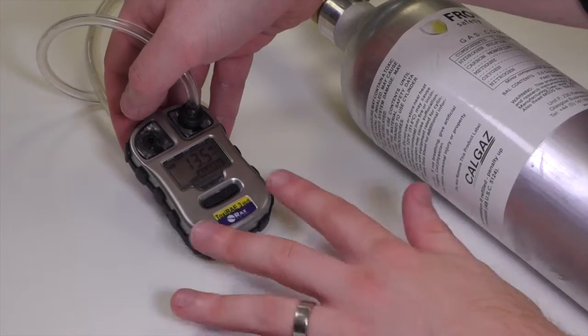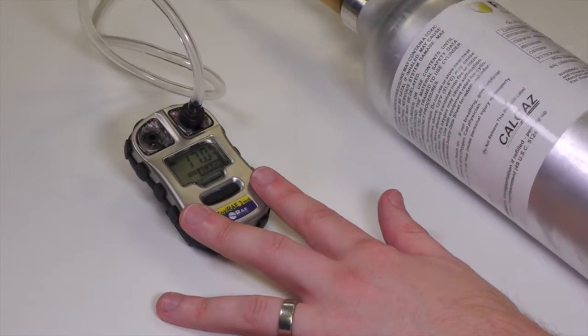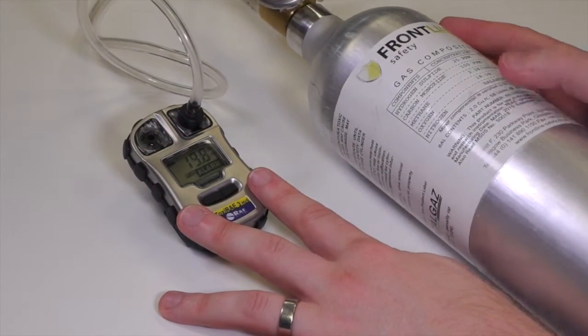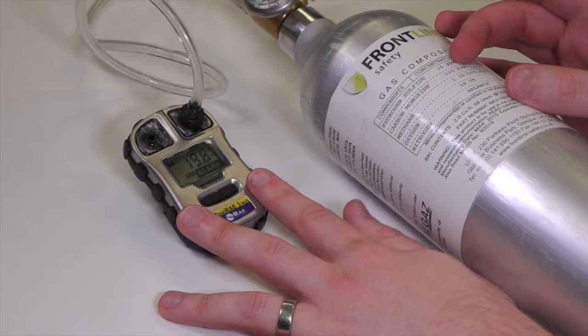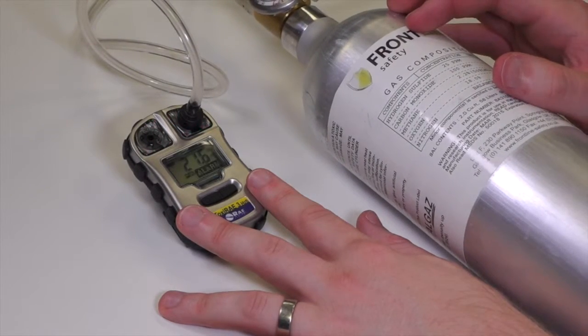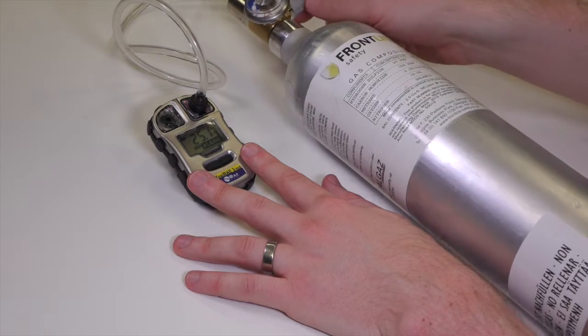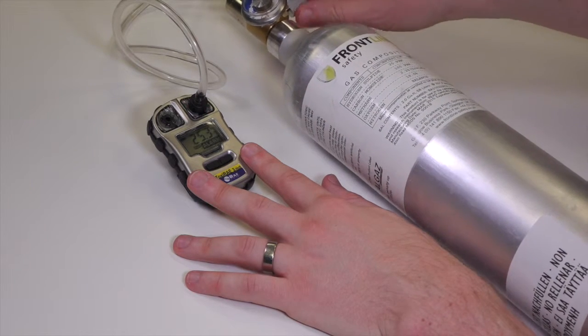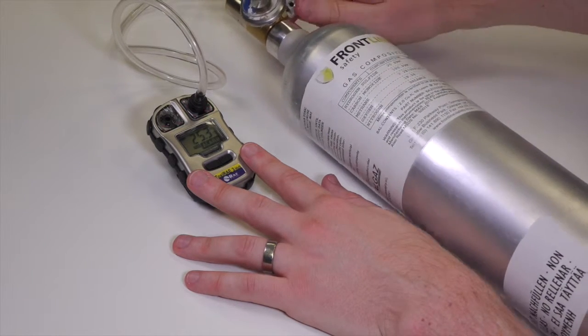So we know there that it's responded to the gas and we should see that reach 25 ppm. 25 ppm in the cylinder, we're looking for that there on screen. And that's it, reached 25 ppm, so the unit's responded as we would expect.